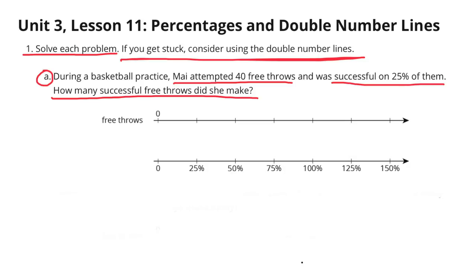Problem A. During a basketball practice, Mai attempted 40 free throws and was successful on 25% of them. How many successful free throws did she make? Well, we know she attempted 40, so 40 would be 100%. Now I want to try to fill out these double number lines.